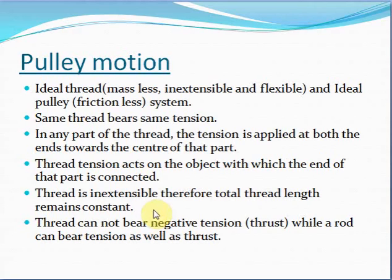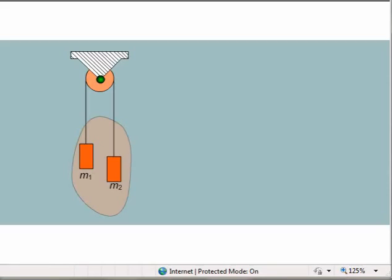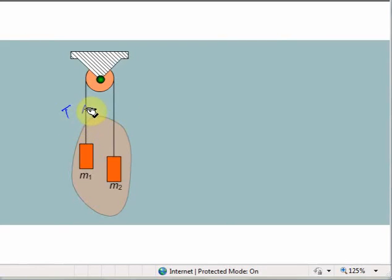Now let's go through various assumptions and facts about the pulley system. The thread used is an ideal thread — that is, it is massless, inextensible, and flexible. Also, the ideal pulley system is a frictionless system. The same thread bears the same tension throughout. For example, here we have a pulley system with one thread, and the tension in this thread will be equal to T throughout. The value of tension remains the same throughout the thread.